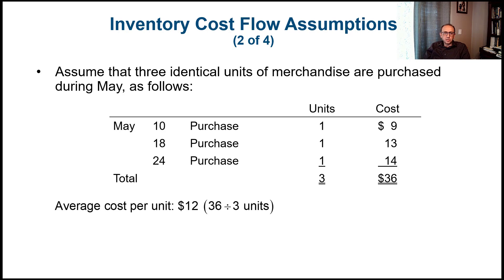Let's look at a numerical example. Three identical units are purchased during May: one unit on May 10th at $9, another on May 18th at $13, and a third on May 24th at $14. The rising costs reflect typical inflation. The total cost for all three units is $36, so the average cost per unit is $12 under the average method.